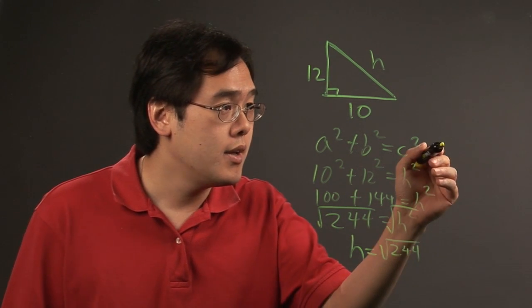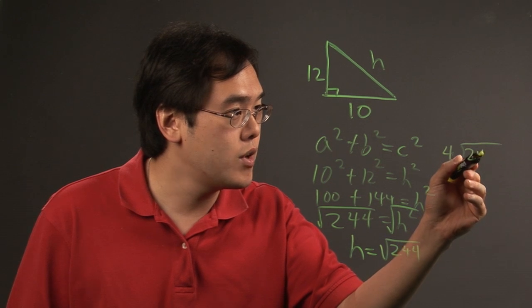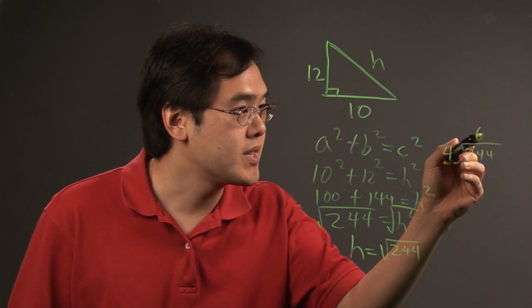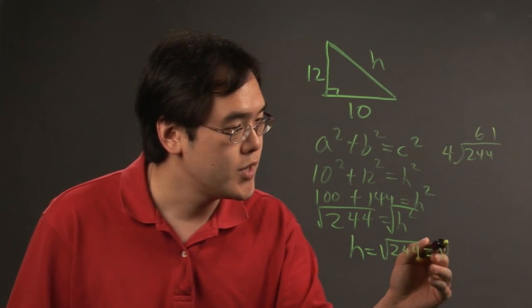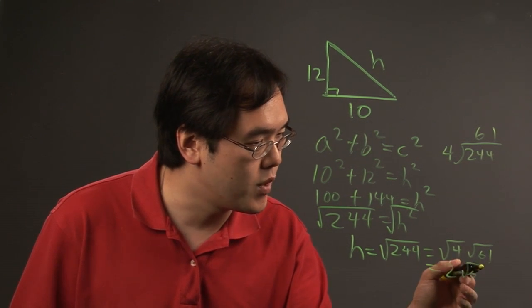Now if you want to break it down, you can divide 4 into 244 because 4 is a perfect square. 4 goes into 24 6 times. 4 goes into 4 1 times. So this can be thought of as square root of 4 times square root of 61 or 2 square root of 61.